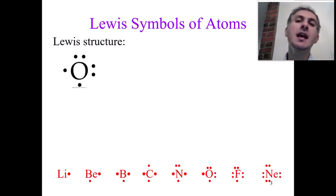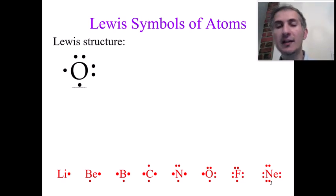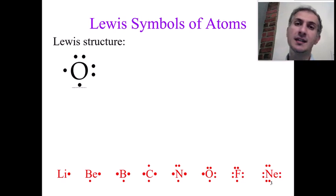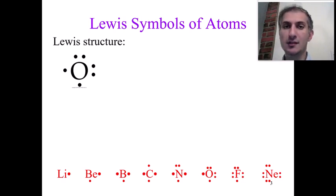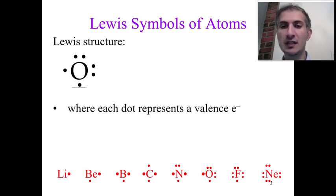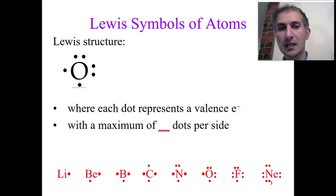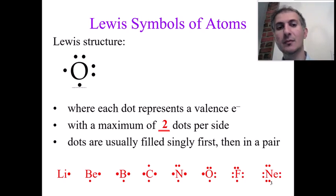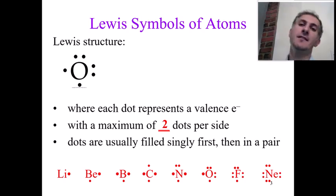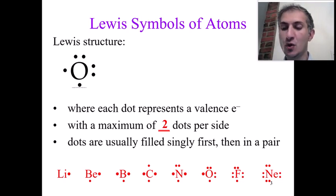In the periodic table we have eight groups, so the maximum number of electrons we can draw around an atom is eight — two dots per each side. Dots are usually filled singly first: we add one single electron on each side, then if there is no more side available, we pair them.